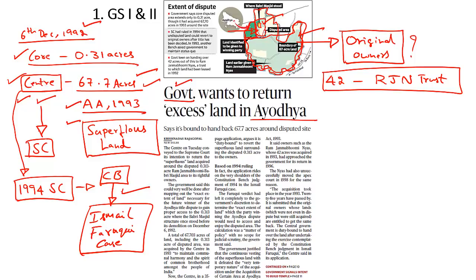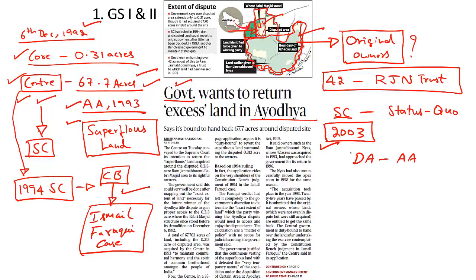The center is requesting Supreme Court permission because in 2003 the court had ordered all parties to maintain status quo at the disputed site. In 2002–2003, some Hindutva outfits had carried out a Bhoomi Puja for the construction of a temple, and the Supreme Court intervened, prohibiting any religious activity in both the disputed and adjacent areas. The 2003 judgment clearly stated that the disputed area and the adjacent area are intrinsic to each other, with all stakeholders ordered to maintain status quo.